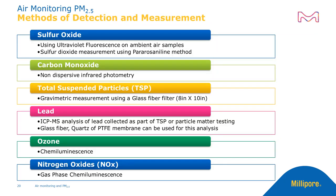The most effective detection methods for each of the top six pollutants can be seen below. Sulfur oxide is best measured using ultraviolet fluorescence on ambient air samples and pararosaniline methods for conventional samples. Carbon monoxide can be detected using non-dispersive infrared photometry. Total suspended particles can be identified via gravimetric measurements, lead through ICP-MS, ozone via chemiluminescence, and nitrogen oxides via gas-based chemiluminescence.